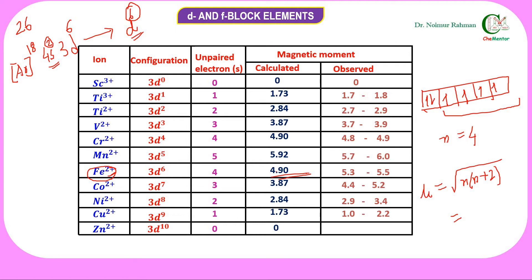Let me tell you a very special trick about calculation of magnetic moment. The magnetic moment values will be approximately equal to the number of unpaired electrons. In this case, the number of unpaired electrons is 4, which is why magnetic moment will be 4 point something.